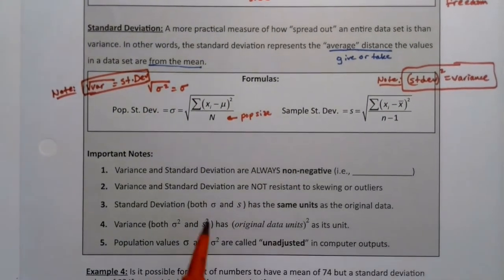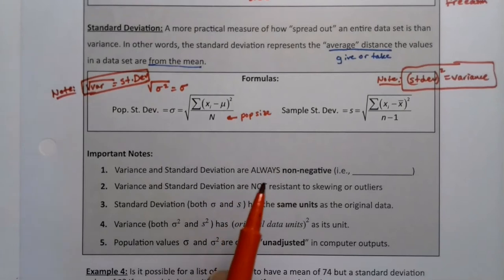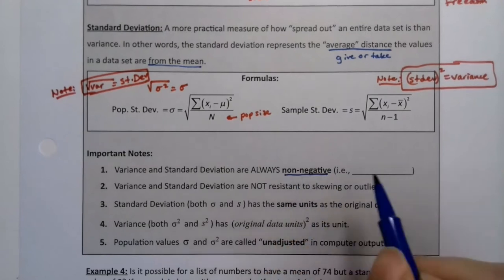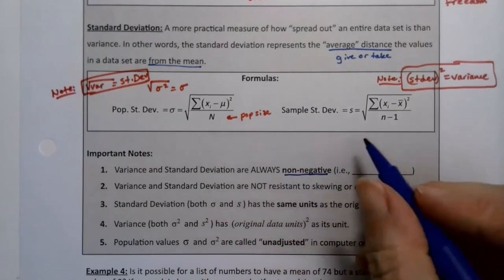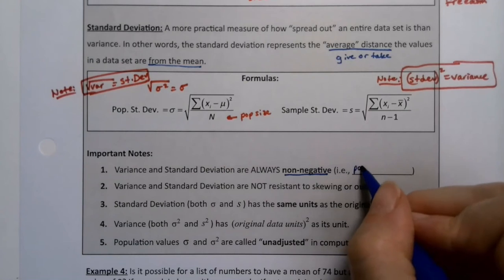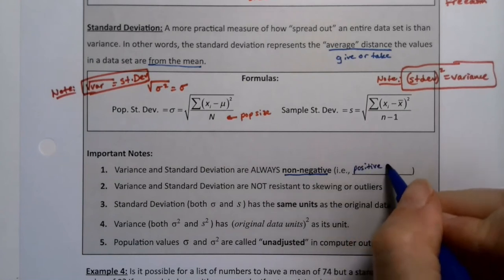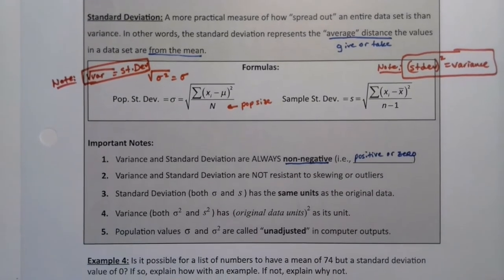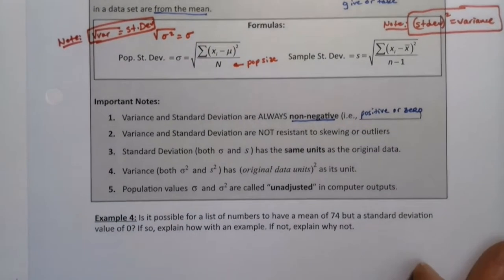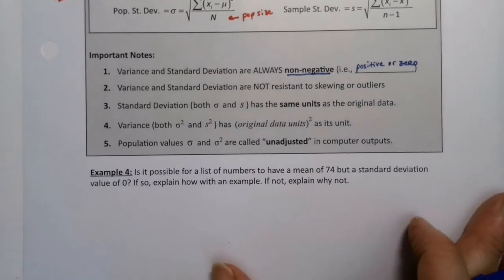Some more important notes. Variance and standard deviation are always non-negative. All right. Now what does that mean? That means that they are greater than or equal to zero. So positive or zero. Now I know what you're thinking. Zero. Could you have a standard deviation of zero? Oh, sure you could.